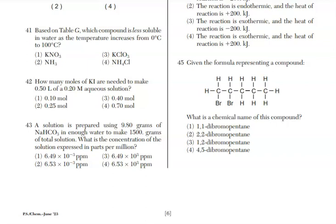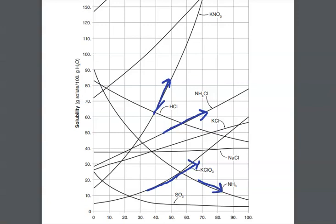Question 41, we're looking at which compound is less soluble in water as the temperature goes from 0 to 100 degrees Celsius. Just looking at the choices, choice one, three, and four, you're dealing with ionic compounds or your salts. Those are solids at room temperature. Ammonia is a gas, and gases decrease in solubility as you increase temperature. Choice two is going to be your answer, but also let's take a look at table G. I drew arrows for the four different choices, and you can clearly see that ammonia is decreasing as the temperature is increasing.